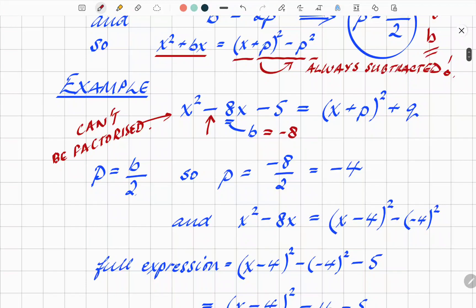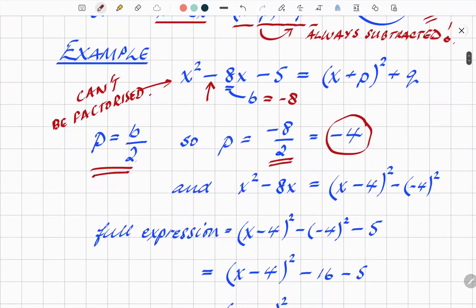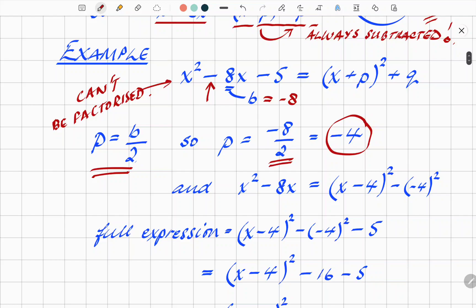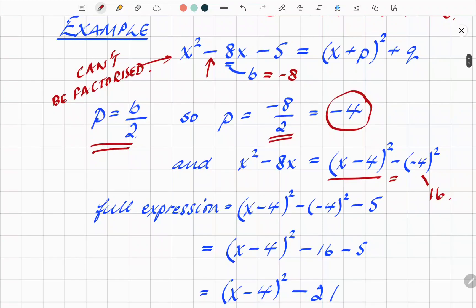So from what we saw earlier, p must equal whatever b is divided by 2, half of b. So p equals -8 over 2, and therefore -4. So using that, x² - 8x must equal (x - 4)² and then minus, remember, subtract always, the -4 squared. And that -4 squared is 16.